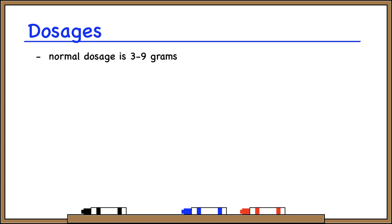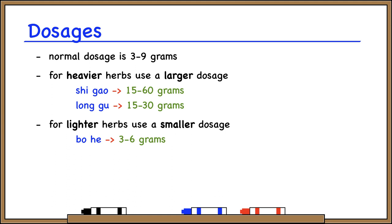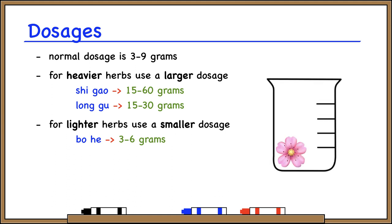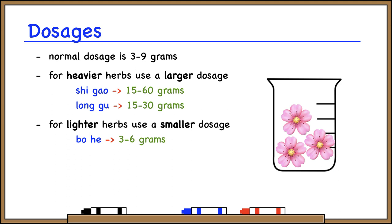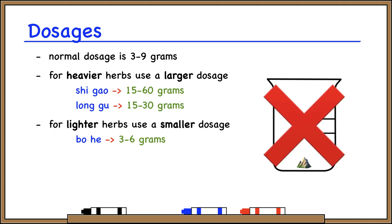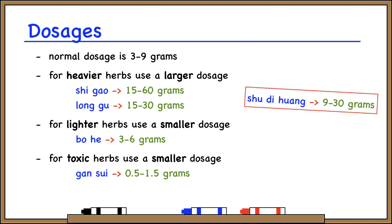Now let's talk about dosage. The normal dosage range for most herbs is 3 to 9 grams — what we want to pay attention to is when an herb's dosage is outside this range. Heavy herbs like minerals and shells tend to use a larger dosage, whereas lighter herbs like flowers tend to use a smaller dosage. Think of it this way: if you have a light, fluffy herb and use the standard 3 to 9 grams, you'll fill up your entire cooking pot. Whereas a heavy herb at 3 to 9 grams will just be a little speck at the bottom. Highly toxic herbs use a very small dosage, and some herbs like Shu Di Huang just have a larger dosage because you need more of it for it to work.